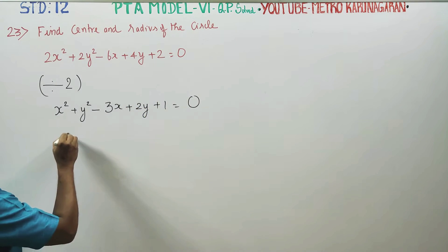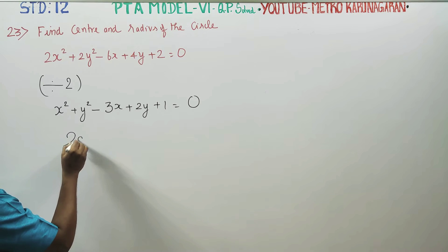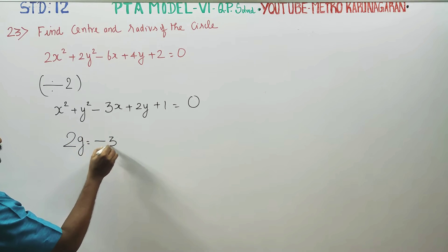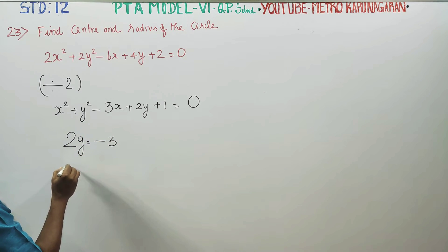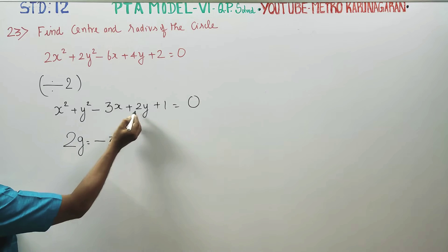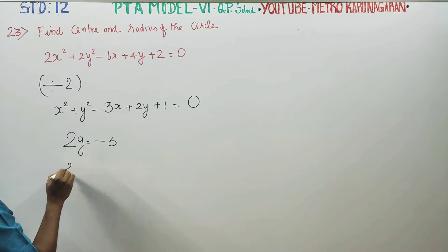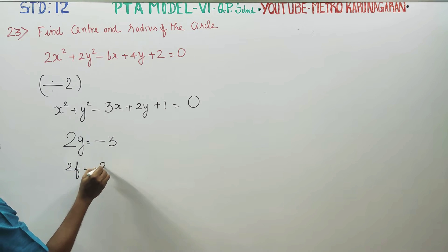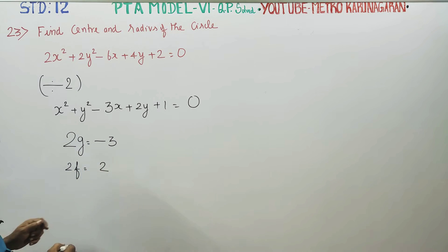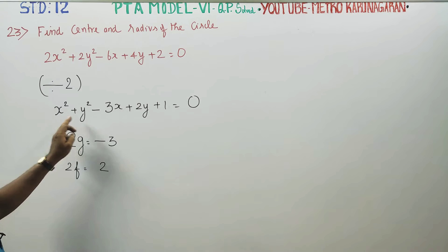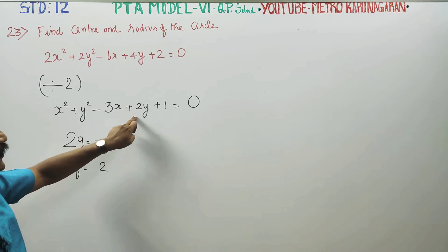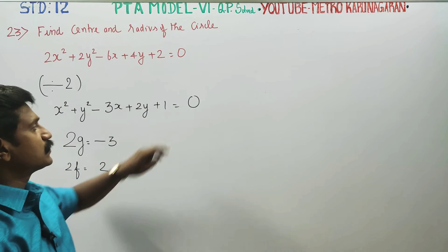Now, this is the sum of 2g — 2g is minus 3. This is the 2f — 2f is equal to 2. The standard form is x squared plus y squared plus 2gx plus 2fy plus c equals 0.